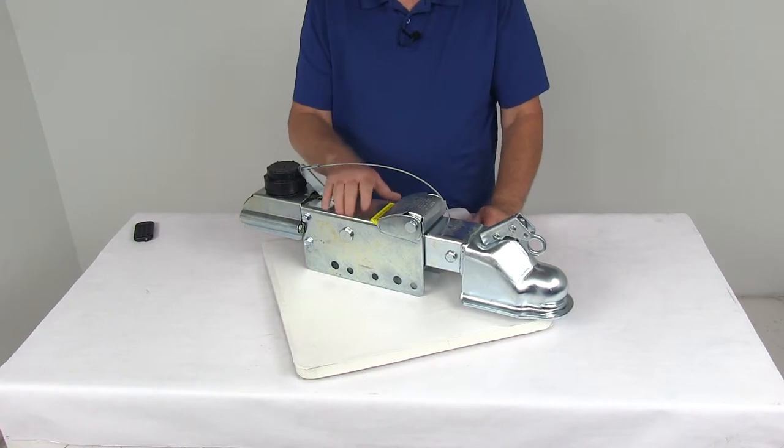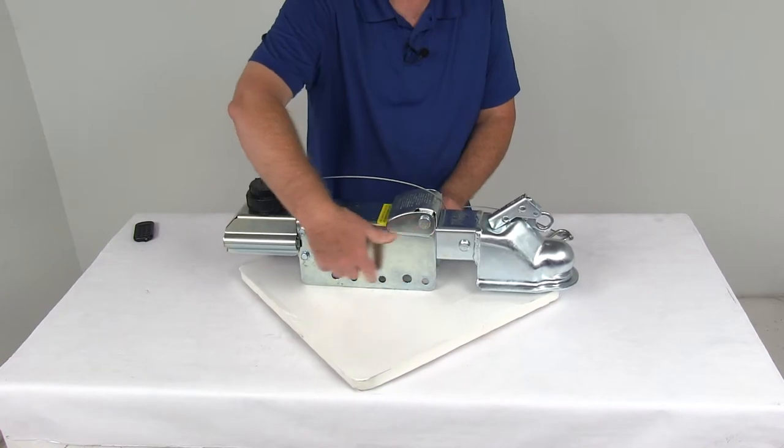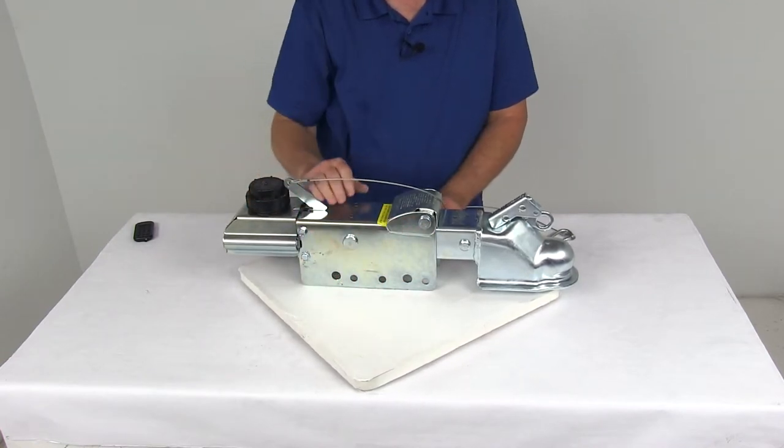Now this actuator is a zinc plating, helps provide corrosion resistance. It is a bolt-on installation. If you look on the bottom of the holes right here, this will bolt onto your trailer tongue.